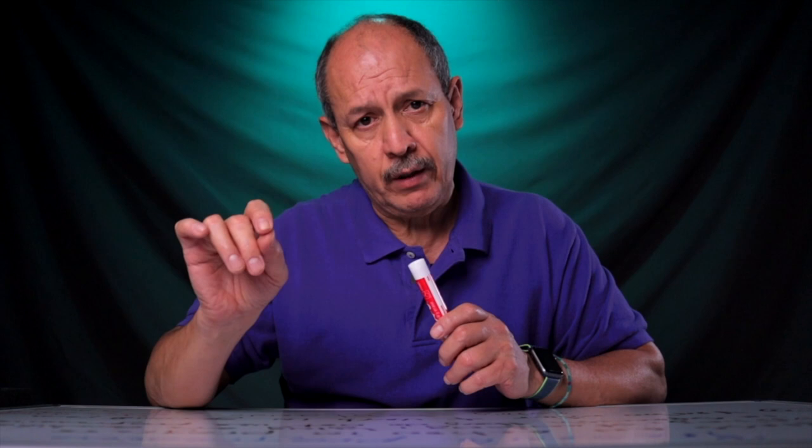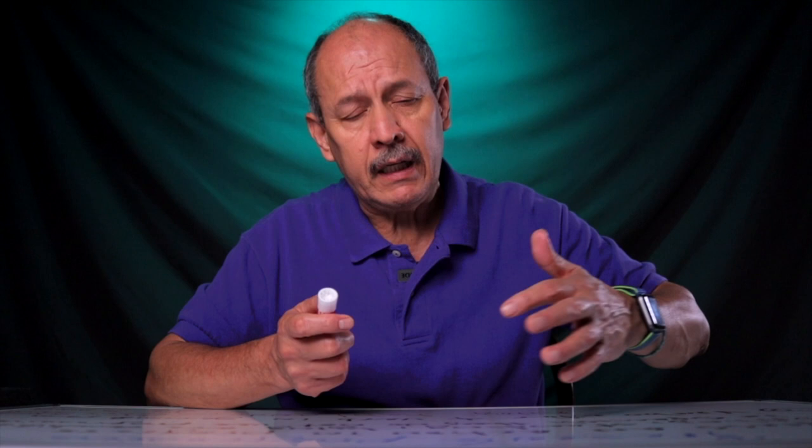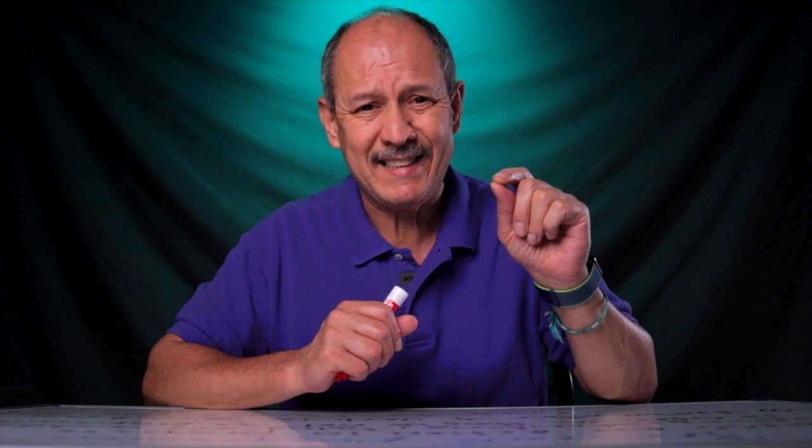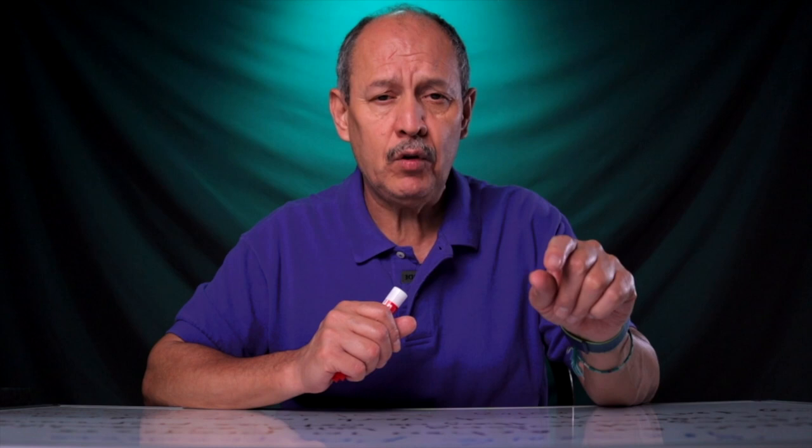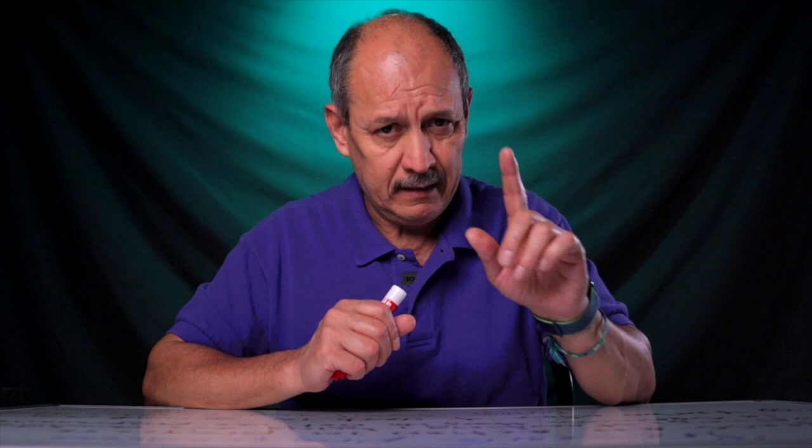Now, how do we create the progressive tense? First of all, we need the verbo estar — the right conjugation of verbo estar. Verbo estar gives us the tense. Right now we are in present tense, so I will recall the conjugation: yo estoy, tú estás, él, ella, usted está, nosotros estamos, vosotros estáis, ellos, ellas, and ustedes están.